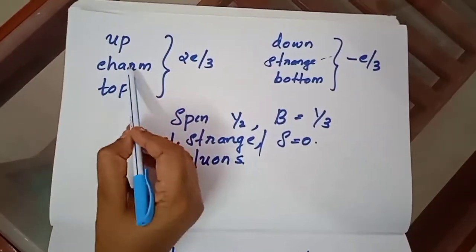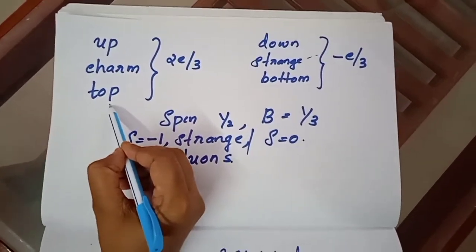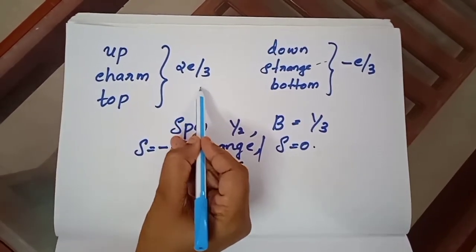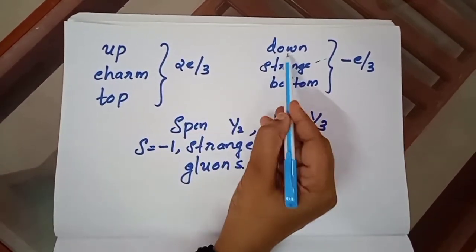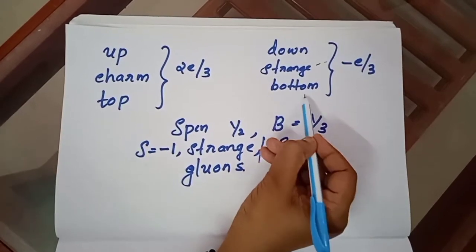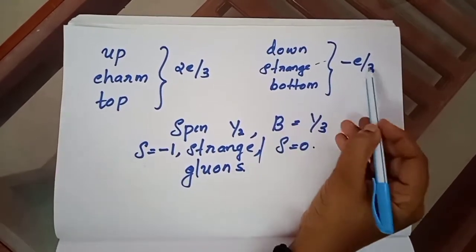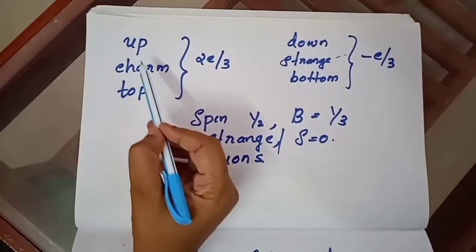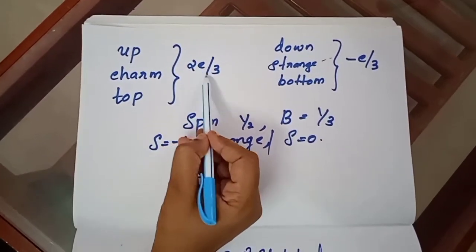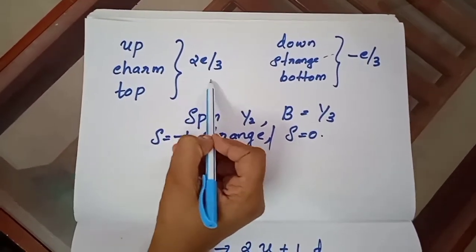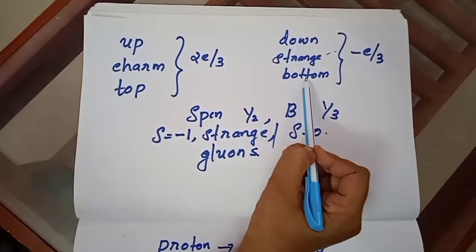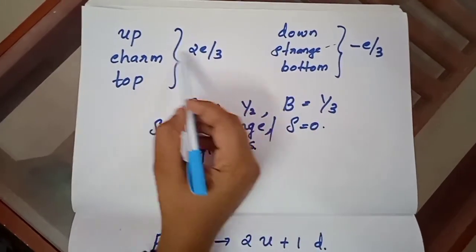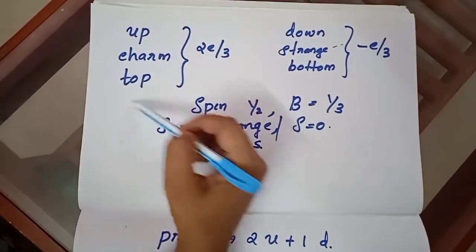The up, charm, and top quarks have charges of +2e/3, while the down, strange, and bottom quarks have charges of -e/3.